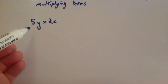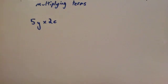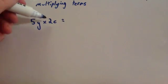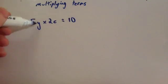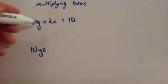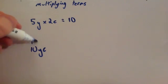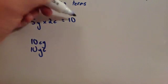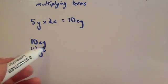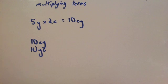If I was doing something like 5y times 2c, one thing to remember is that whenever you times letters together, you try to put your answer in alphabetical order. So here I would do 5 times 2, which is 10. But instead of writing 10yc, because c comes before y in the alphabet, you'd actually write 10cy. Technically 10yc is the same as 10cy, but it's a better habit to write it in alphabetical order.